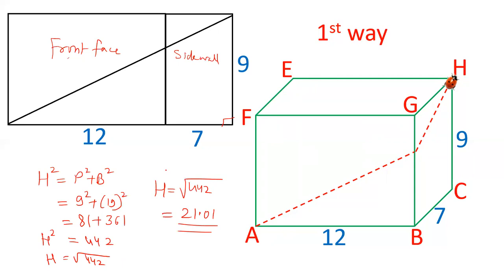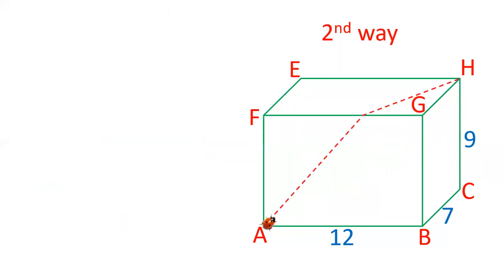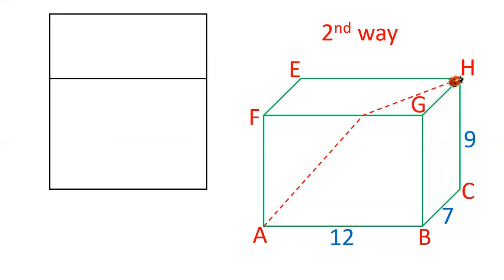Now let's see what is the second way it can reach. First, it can move to this point along this line and then on the top surface. What is this length? This is the front face and this is the top face. It can move along this path.